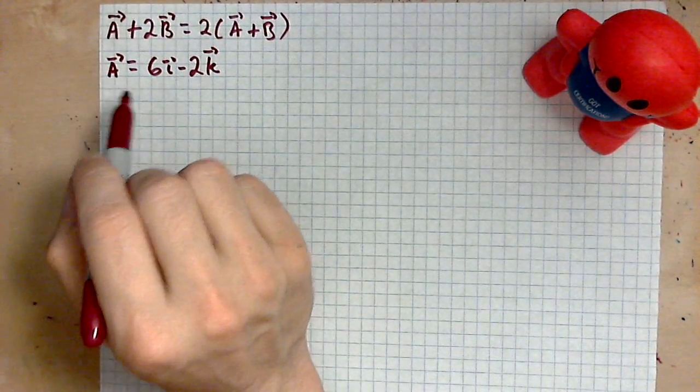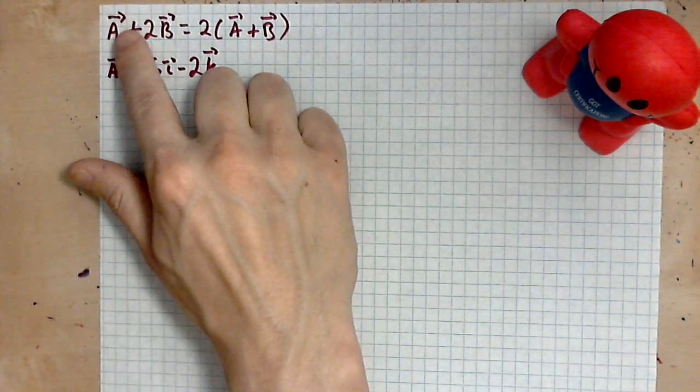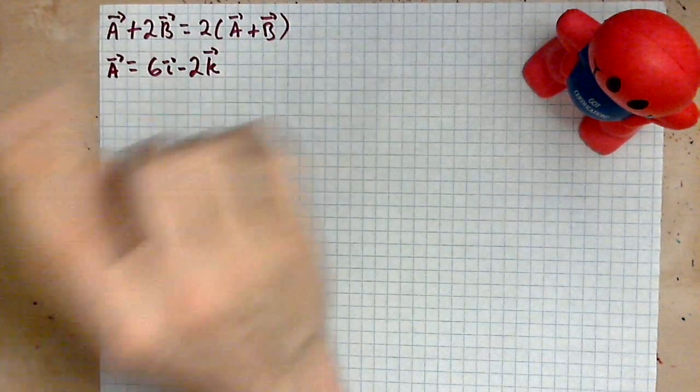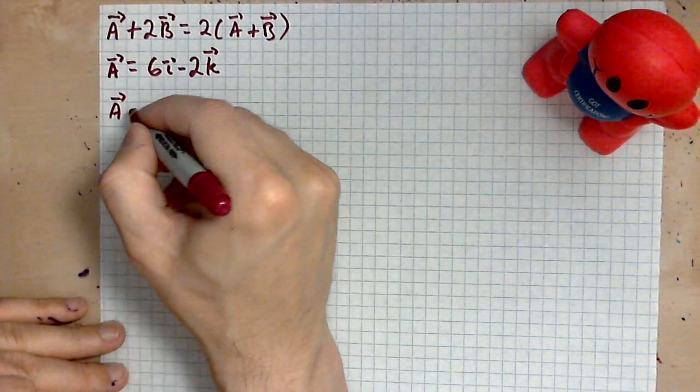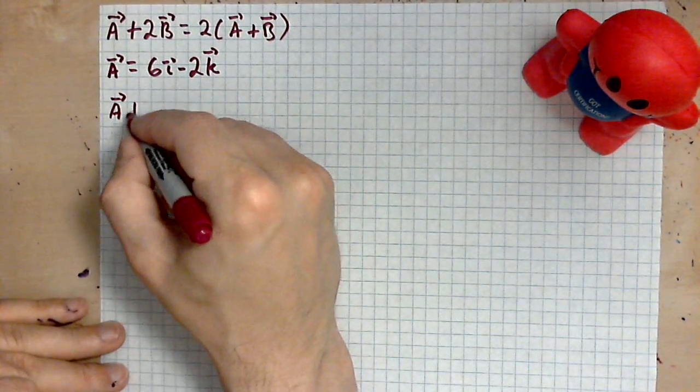So from the first equation, isolate b. Okay, isolate b and work with the terms the way you would work with regular terms and regular algebra. So you have a plus 2b.